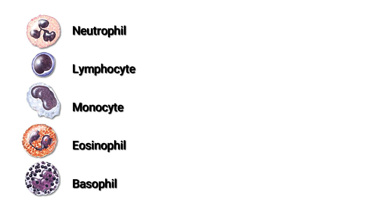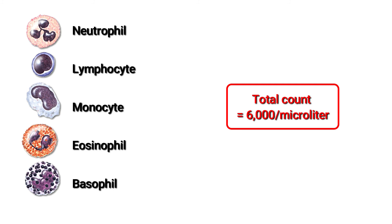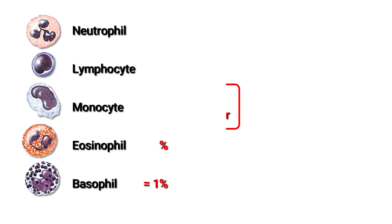For example, let's look at the person whose total WBC count we measured earlier. After we entered the blood sample into the cell counter machine, the result came out as follows. Total count is 6,000 per microliter. Among them, neutrophils are 75%, lymphocytes are 20%, monocytes are 2%, eosinophils are 2%, and basophils are 1%. This means among the 6,000 WBCs: 75% are neutrophils, 20% are lymphocytes, 2% are monocytes, 2% are eosinophils, and 1% are basophils. We should know the normal ranges of these differential counts — please have a look.